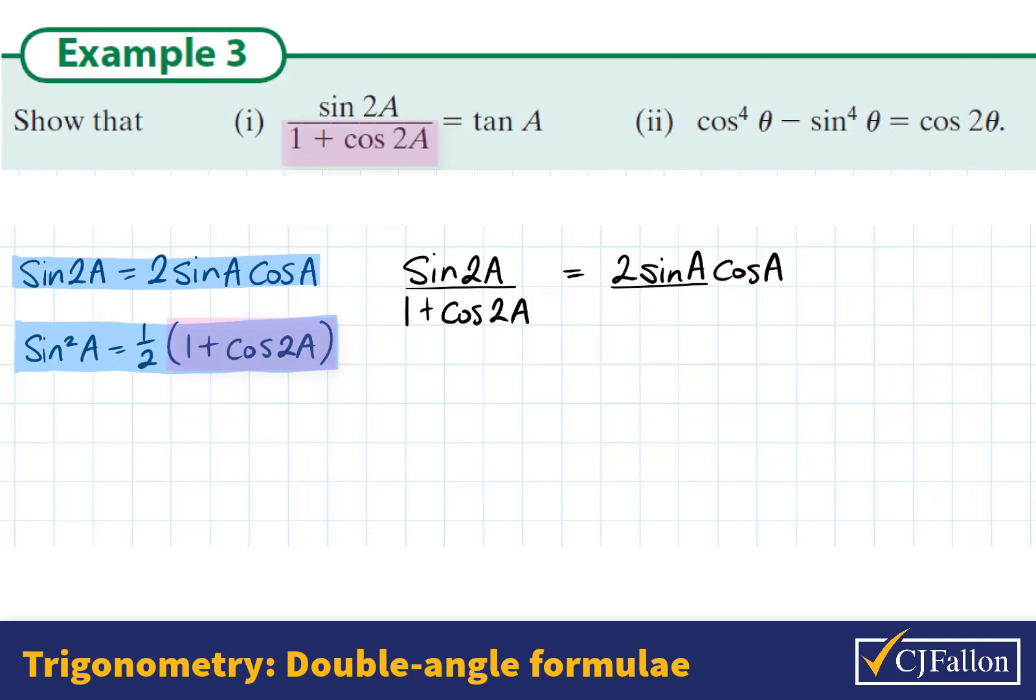So sine 2A is 2 times sine A cos A by the first formula, and 1 plus cos 2A is 2 times sine squared A by the second formula. 2 divides in above and below as does sine A, leaving us with cos A over sine A which is tan A, so we've proven the identity. That's the first one.